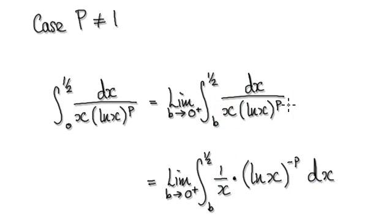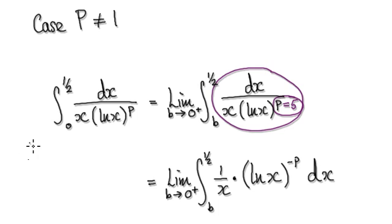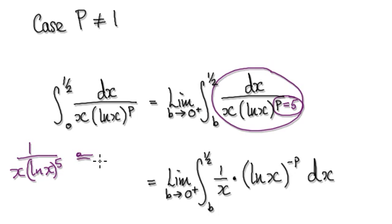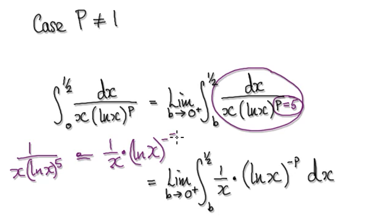Let's imagine p equals 5. So this thing here is like asking you to integrate x times the natural log of x to the power of 5. When you come to integrate this, visualize it as 1 over x — that's this bit here — multiplied by the natural log of x to the power of minus 5 — that's this bit here.